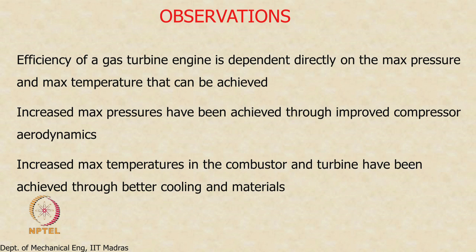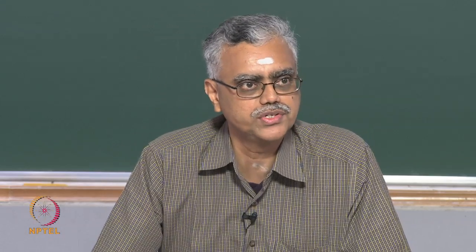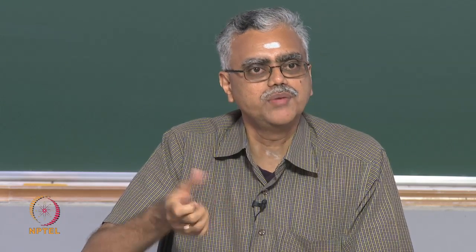Even improving the pressure ratio of a single compressor stage from 1.15 to 1.2 could reduce the number of stages by about 5, eliminating roughly 700 blades — a considerable weight reduction. Today, only small improvements in efficiency are possible; we are now talking about ratios from 1.15 to 1.17. Further gains must come from materials and improved aerodynamics — not increasing pressure ratio, but making each stage do more with less, and from better cooling and materials in the combustor and turbine.